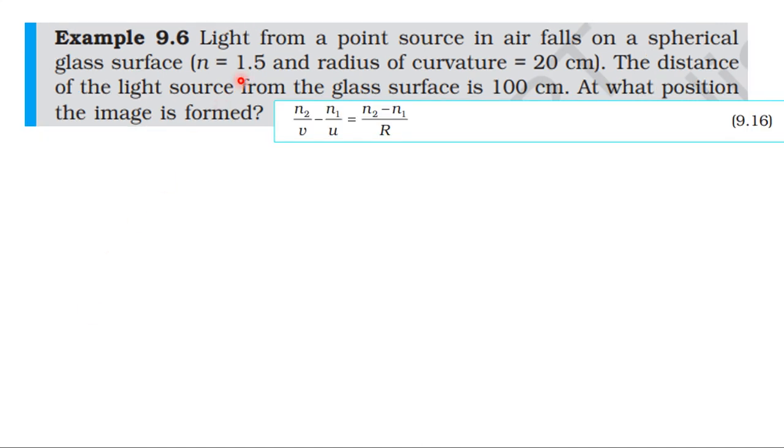So a point source is placed in front of the spherical glass surface. The glass material has refractive index 1.5 and the radius of curvature of the spherical surface is 20 centimeters. The object is placed at a distance of 100 centimeters in front. To solve this problem, the spherical surface has a pole and the point is the center of curvature. The line connecting the pole and center of curvature is the principal axis. The object is placed on this axis.